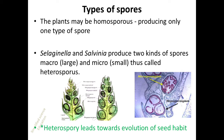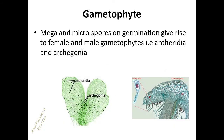Heterospory is one of the most important characteristics leading towards the evolution of seed habit. Germination of megaspores and microspores gives rise to female and male gametophytes respectively. The male sex organ is known as antheridium and the female sex organ is known as archegonium. Antheridia are sessile or shortly stalked and surrounded by sterile jackets. Archegonia have two parts: neck and venter.